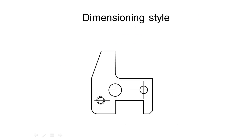So let's take a look at the different dimensioning styles. There's a particular way that we need to represent dimensions on the drawing, and there are also certain conventions that we follow in how we locate the dimensions on our drawing relative to the object that we're dimensioning.